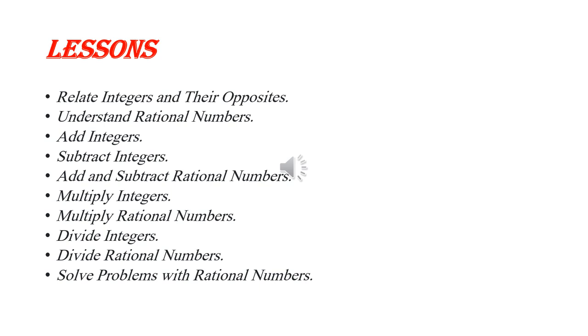Adding integers is straightforward. When you add two integers with the same sign, you add their absolute values and keep the sign. For different signs, subtract the smaller absolute value from the larger one and keep the sign of the number with the greater absolute value. For example, adding negative three and seven gives us four.